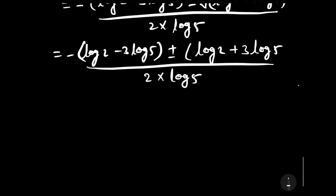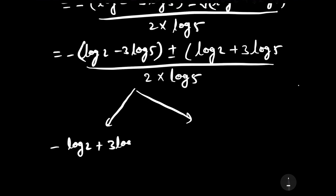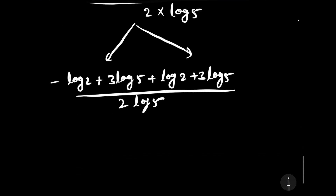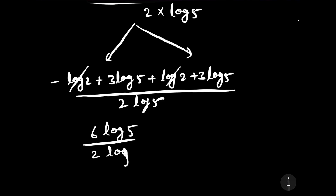This gives us two values. For the first root, taking the plus sign: minus log 2 plus 3 log 5 plus log 2 plus 3 log 5, all over 2 log 5. This simplifies to 6 log 5 over 2 log 5. Log 5 cancels and 6 divided by 2 gives 3. Therefore, one root is x equals 3.